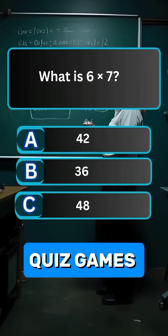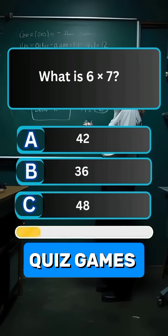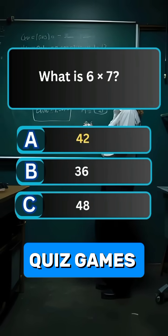Question 1. What is 6 multiply by 7? Answer A. 42.